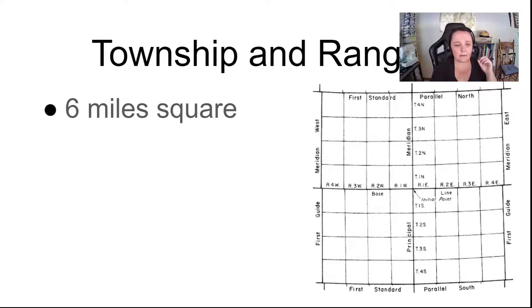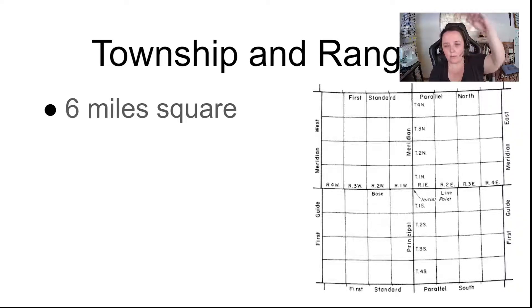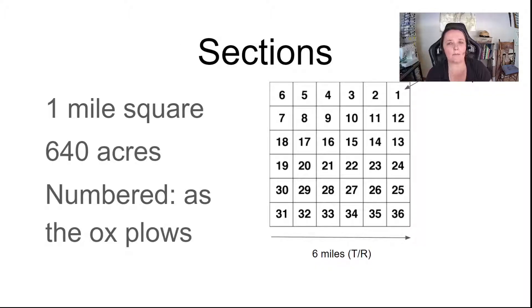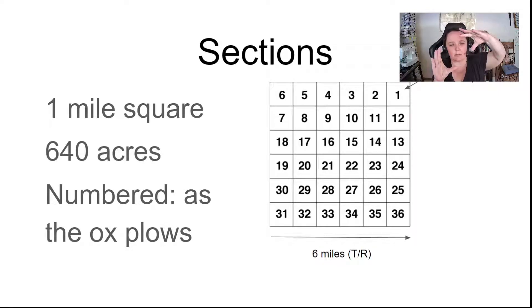In this drawing you can see that we start at the initial point and then count one, two, three, four west or east, and then one, two, three, four north or south. So each grid square has a designation of either north or south and either east or west. Within each township, it's divided into 36 sections, and each section is one mile square. So we're looking at one township square — six miles by six miles divided up into 36 little sections.